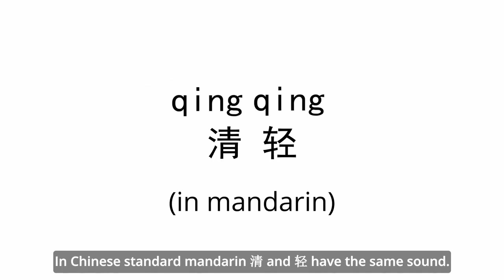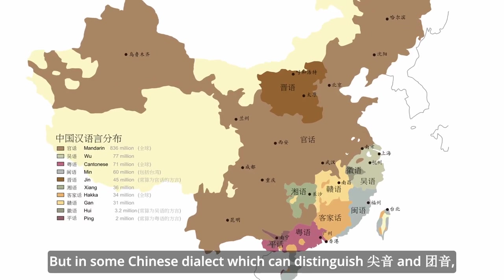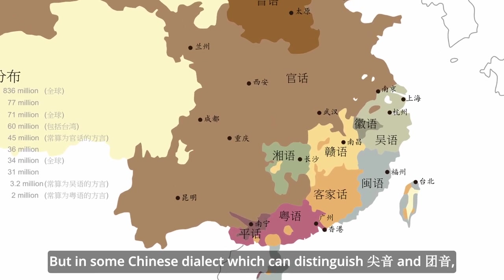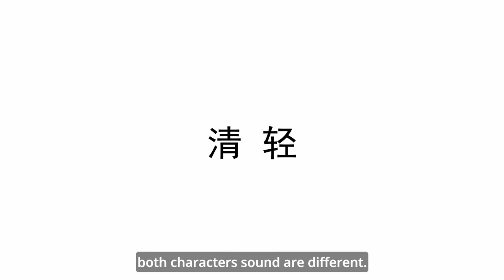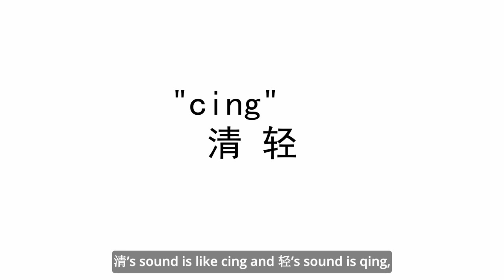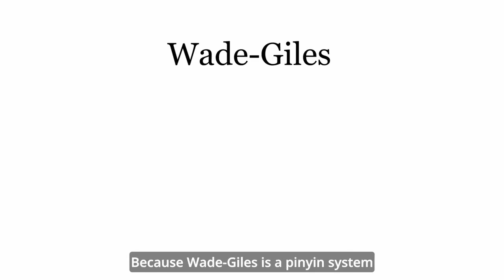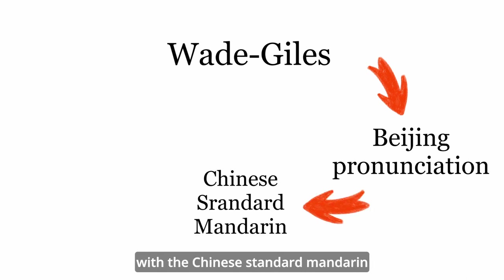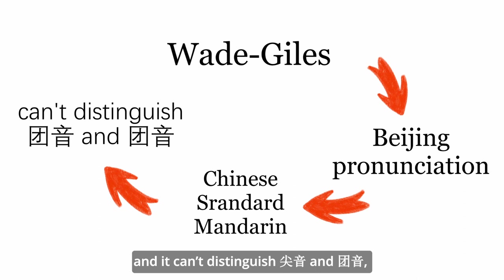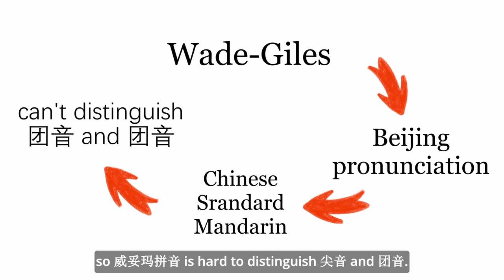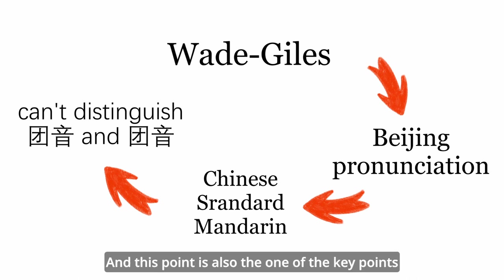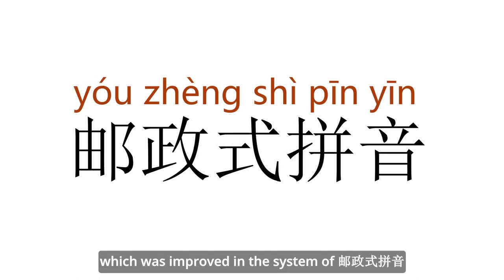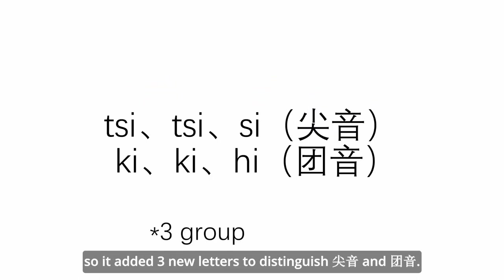In Chinese standard Mandarin, both Qing characters have the same sound. But in some Chinese dialects which can distinguish Jian Yin and Tuan Yin, both characters' sounds are different. Because Wade-Giles is a pinyin system based on Beijing Mandarin, and Beijing Mandarin has very close sounds to Chinese standard Mandarin, it can't distinguish Jian Yin and Tuan Yin. So with Wade-Giles Pinyin, it's hard to distinguish Jian Yin and Tuan Yin. This is one of the key points improved in the Yu Zheng Shi Pinyin system, which added three new letters to distinguish Jian Yin and Tuan Yin.